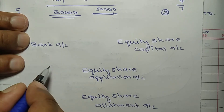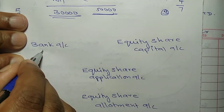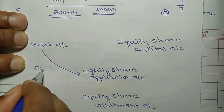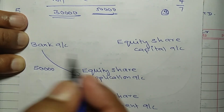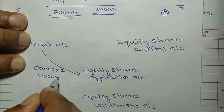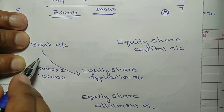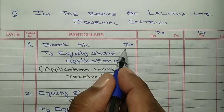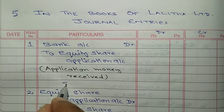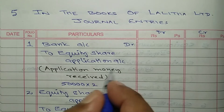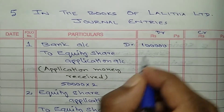Now for journal entries — first entry: application money received. Bank account debit to equity share application account. 50,000 applications are received at Rs 2 per share, so totally Rs 1,00,000. Bank account debit Rs 1,00,000 and equity share application account credit Rs 1,00,000.